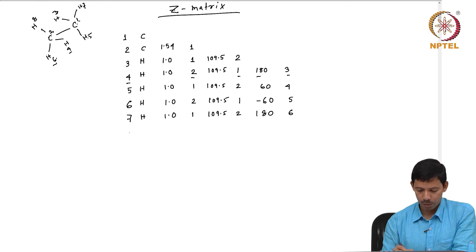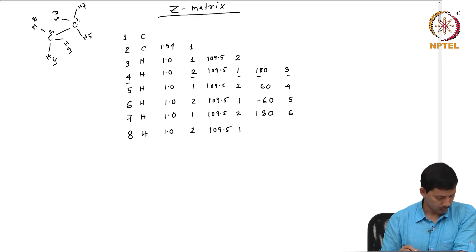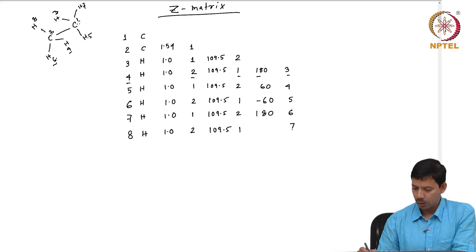Number 8 is a hydrogen connected to 2 by a bond distance of 1.0. 8, 2, 1 is the angle of 109.5 and with 8, 2, 1, 7 is my dihedral of 60 degree.